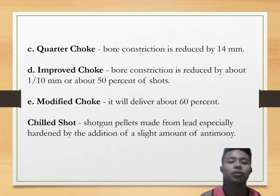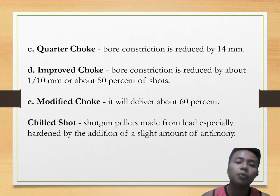Chilled shot refers to shotgun pellets made from lead especially hardened by the addition of a slight amount of antimony. Antimony is a chemical element that is slightly silver in color.